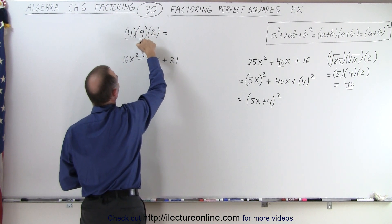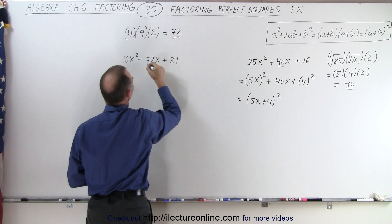This is equal to 4 times 9, which is 36, times 2, which is 72. And notice we have a 72 in the middle.